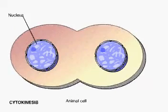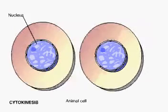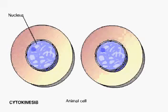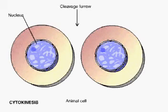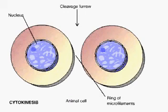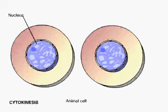In animal cells, cytokinesis begins with the formation of a cleavage furrow. At the site of the furrow, a ring of microfilaments contracts, much like the pulling of drawstrings. The cell is pinched in two, creating two identical daughter cells.